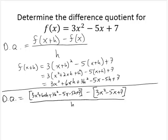Now, if you've done this correctly, several terms should add to zero in the numerator. I have 3x² and I'm subtracting 3x² — those go to zero. I have -5x and I'm subtracting -5x — those go to zero. I have +7 and I'm subtracting +7 — those go to zero.